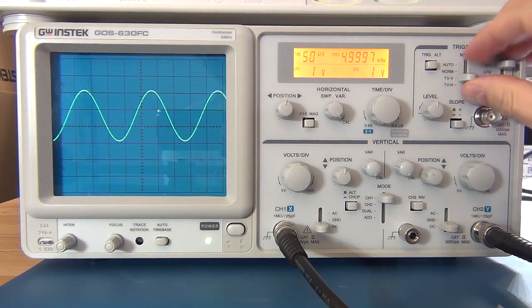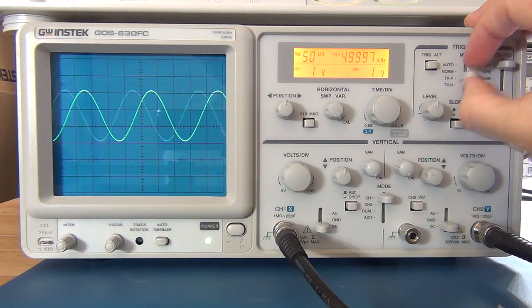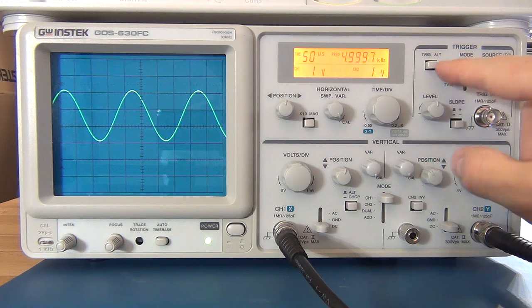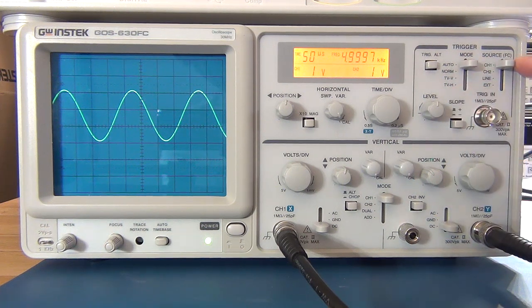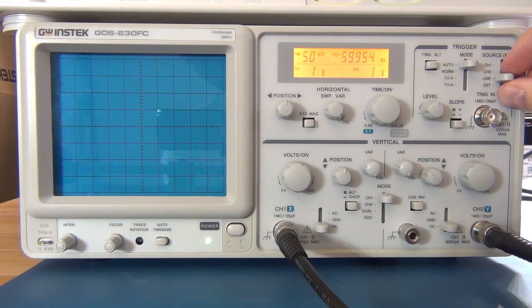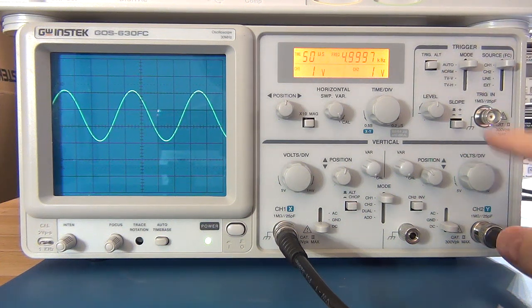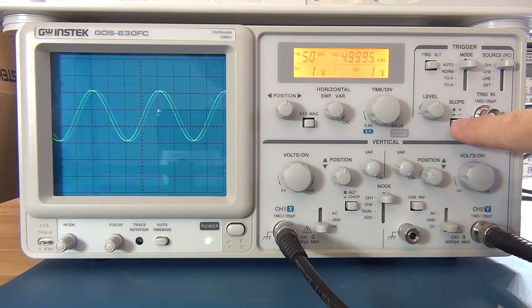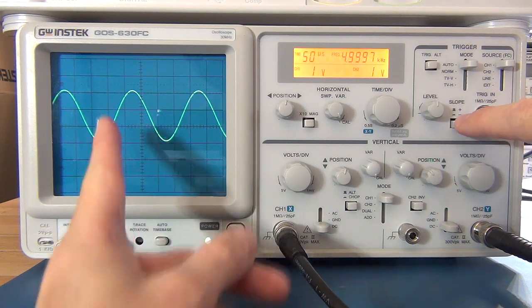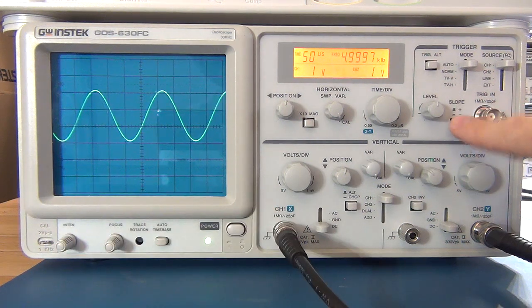You've also got a TV mode and a TVH for looking at analog TV signals. I at this point in time operate most of the time in auto. You've then got a source. You can trigger off channel 1, channel 2, line for your line voltage or external. You've got an external input as well. You've then got your positive or negative slope that you're triggering off the front-end positive or the negative part of the slope of your signal.